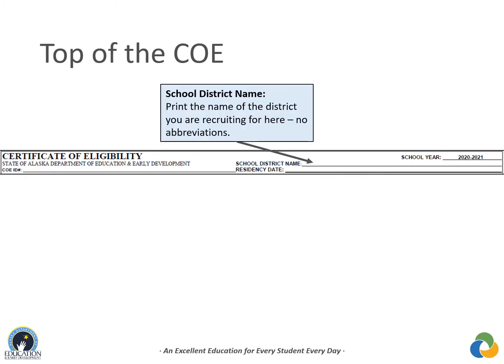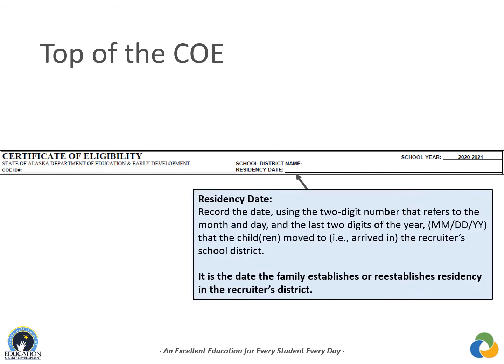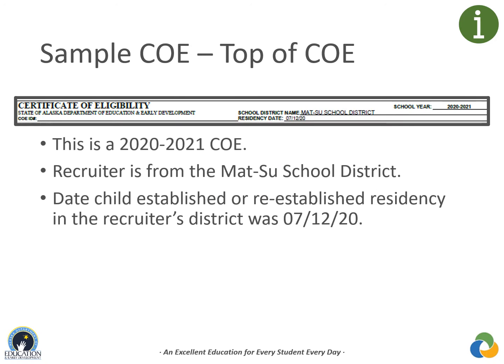The school district name is the name of the district recruiting the child; if creating the COE in the web system, this field will be auto-populated. The residency date is the date the family establishes or re-establishes residency in the recruiter's district. Record the date the children moved to or arrived in the recruiter's school district after the most recent qualifying move, using two-digit numbers for month, day, and last two digits of the year. For this sample COE, the residency date is 7-12-20, the date the children established residency in the Mat-Su school district during the 2020-2021 school year.